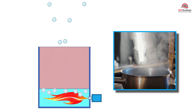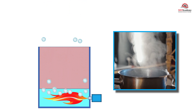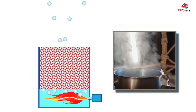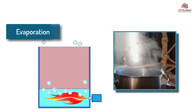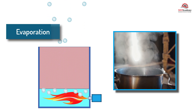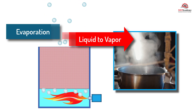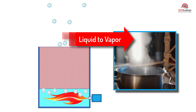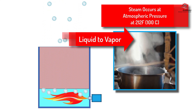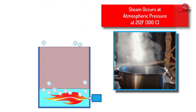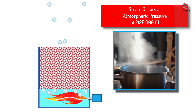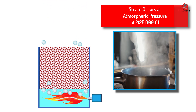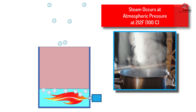When heat is added to water, its temperature will rise until it hits the point of evaporation. At this point it changes from a liquid into a vapor or steam. This occurs at 212 degrees Fahrenheit or 100 degrees Celsius at normal atmospheric pressure.